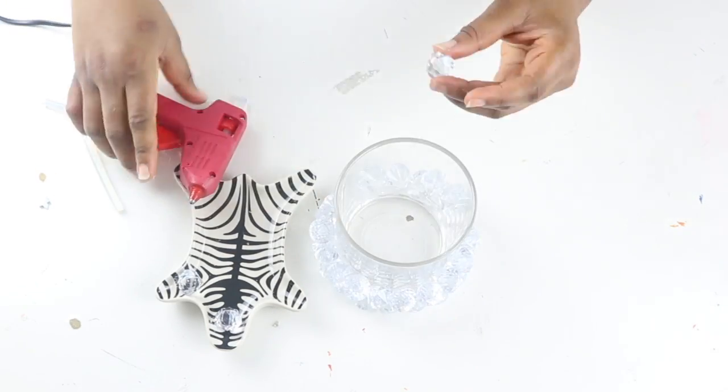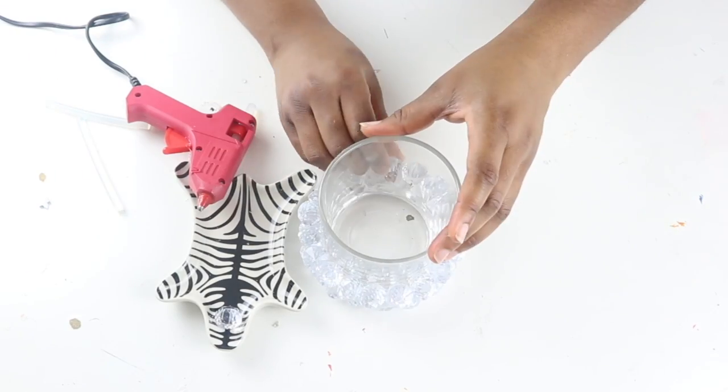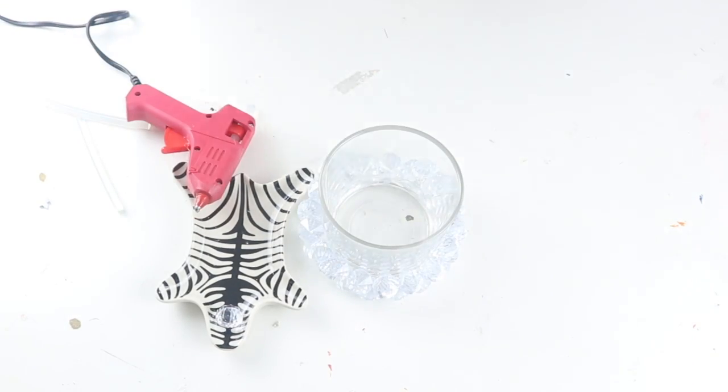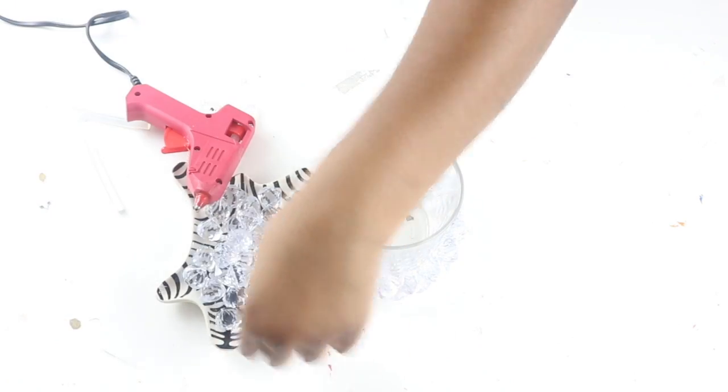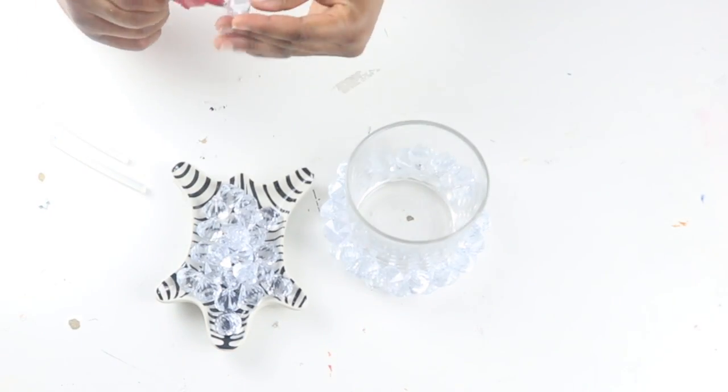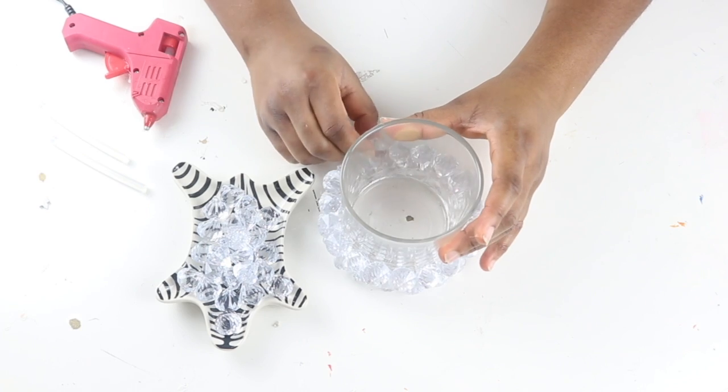So for the third row, again the diamonds were pointing downwards, but this time around I left space and gap in between them. Just again to give that effect when the candle's in the jar.